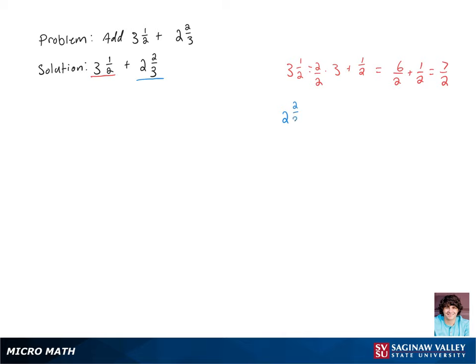Now moving on to 2 and 2 thirds, that's the same as 2 plus 2 thirds. Let's find a common denominator by multiplying 2 by 3 over 3 and then we get 6 thirds plus 2 thirds equals 8 thirds.